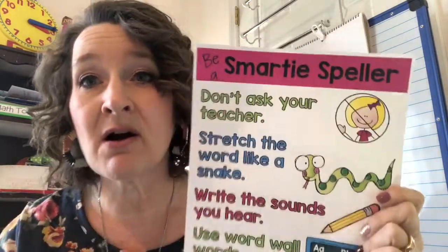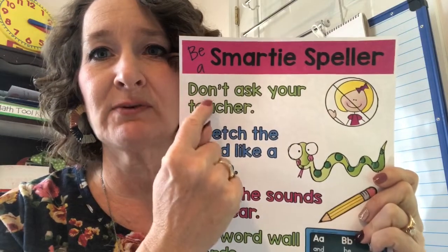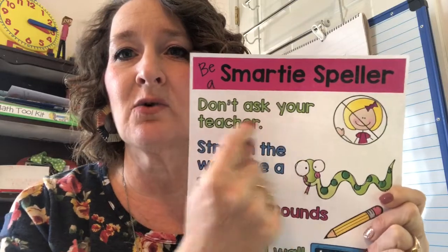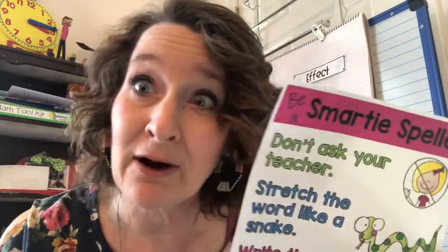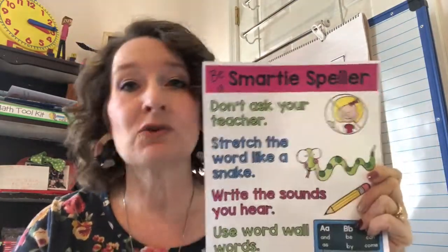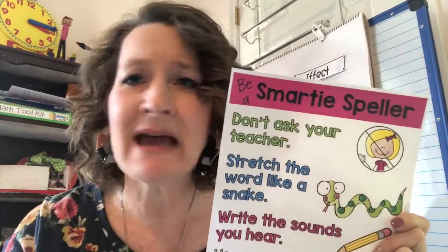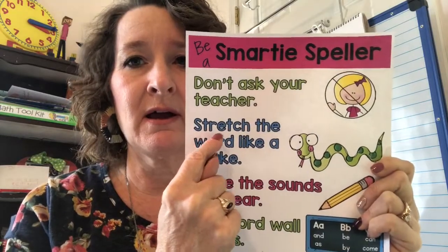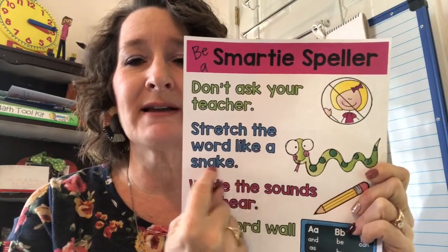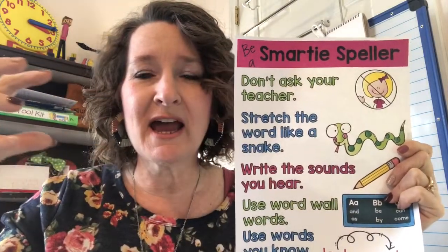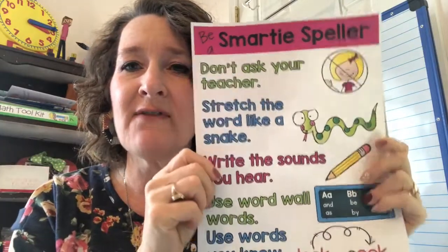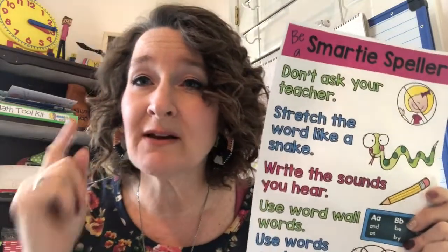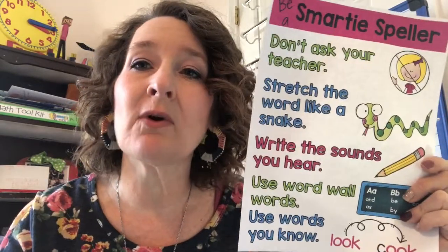Remember when you're a smarty speller — look at this first one. There's a contraction we've learned: don't ask your teacher. Your mom and dad are there being your teachers right now. So remember when you're trying to spell, don't ask mom and dad 'How do I spell this?' Instead, we're going to stretch the word like a snake — stretch it out, listen for every sound, and then write the sounds you hear.